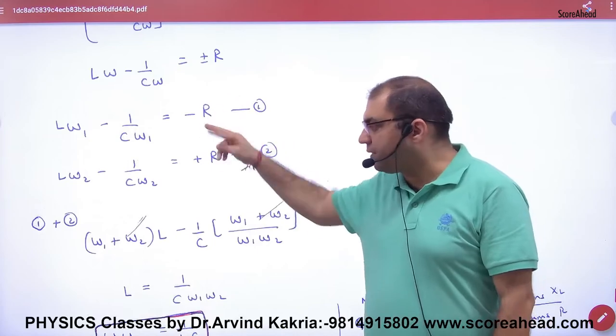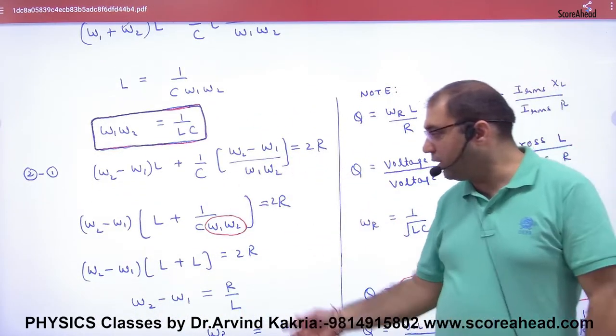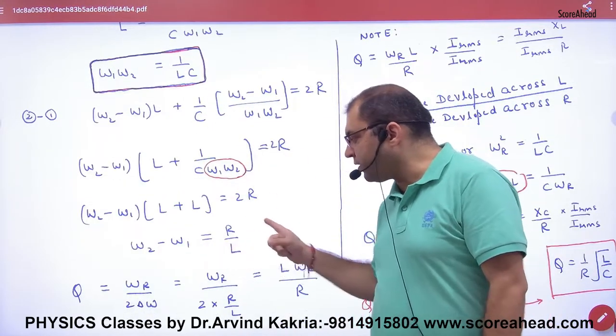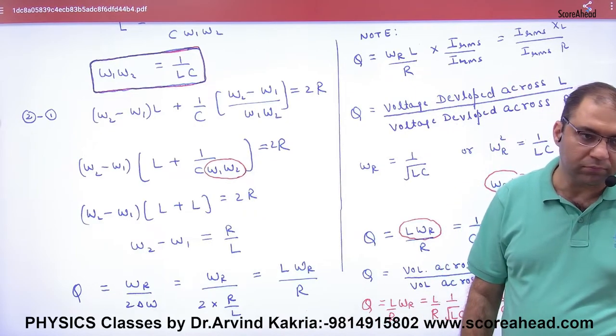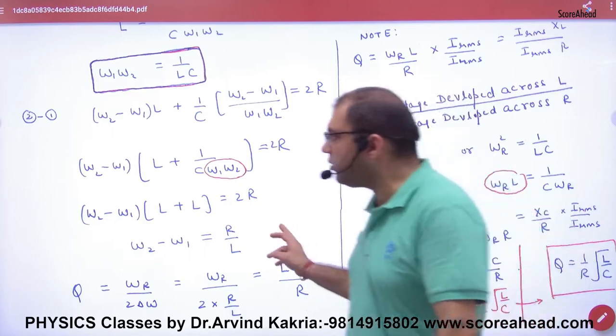Omega1 and omega2 we are going to equal - solve omega2 minus omega1. Solve omega2 minus omega1 and put it in the box. Remember this formula.